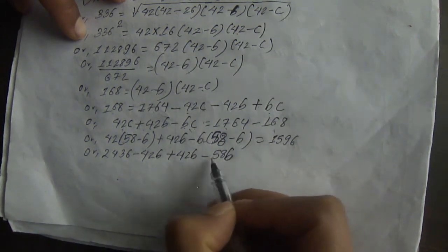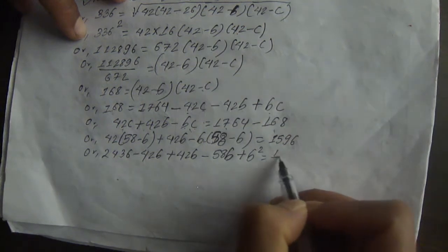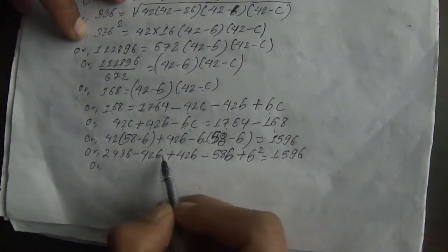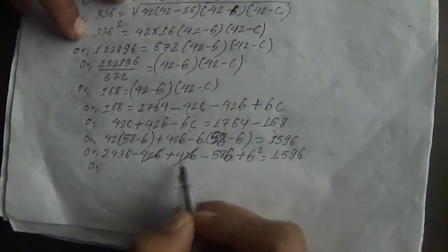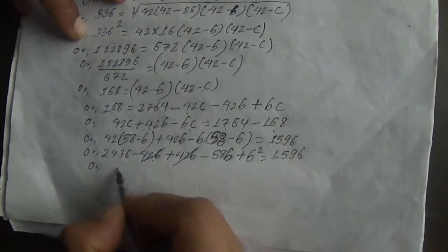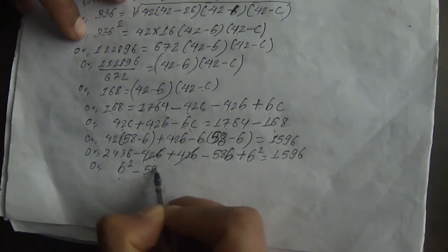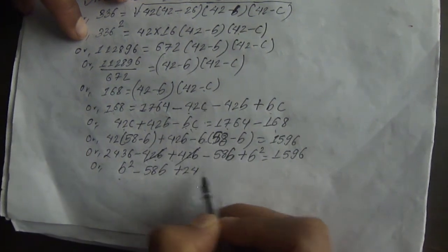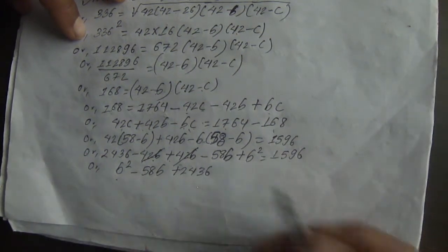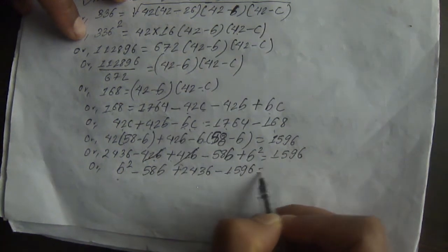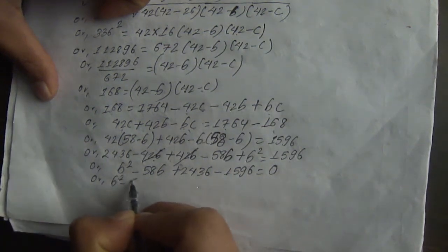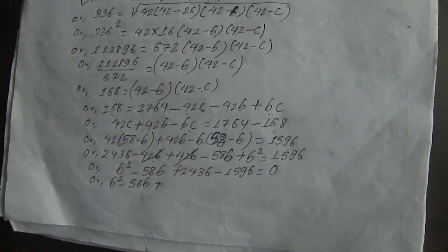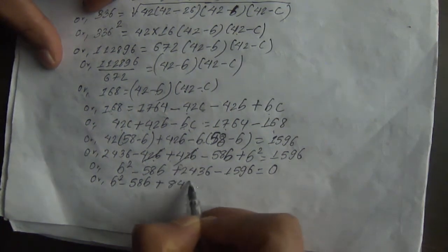Expanding: 58B minus B squared plus 42B plus 42B minus 58B plus 2436 minus 1596 equals 0. This simplifies to B squared minus 58B plus 840 equals 0. This is a quadratic equation.